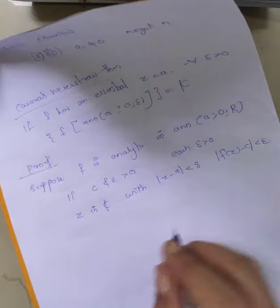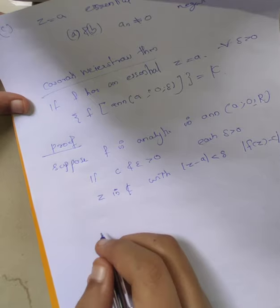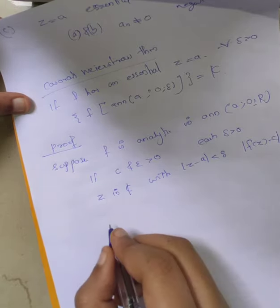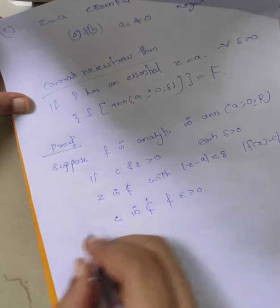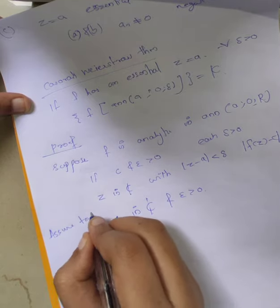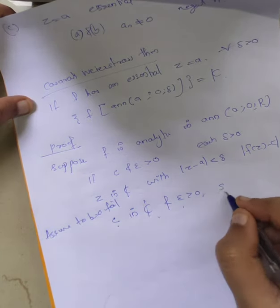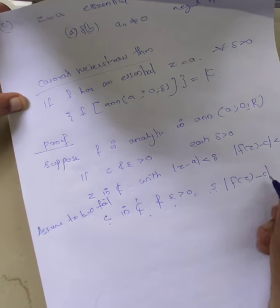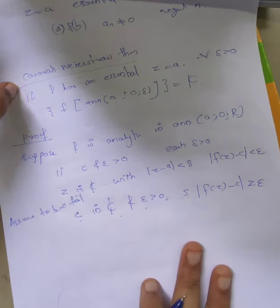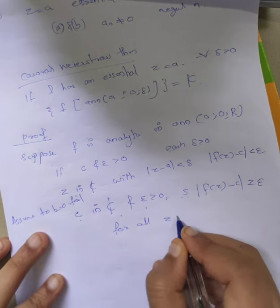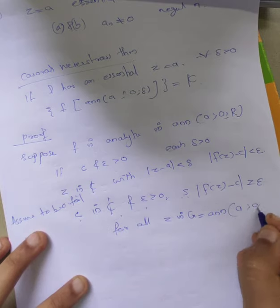We assume the conclusion is false and arrive at a contradiction. Assuming it fails, there exist c in ℂ and epsilon greater than 0 such that modulus of f(z) minus c is greater than or equal to epsilon for all z in the annulus A(0, delta).